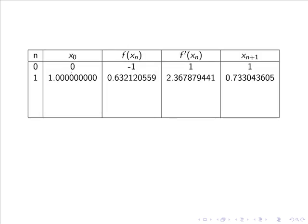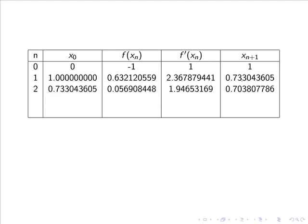So we started off with a guess of 0, got a new approximation of 1, and now have an approximation of 0.733. If we do another iteration using the exact same approach we then get an answer of 0.703807786.